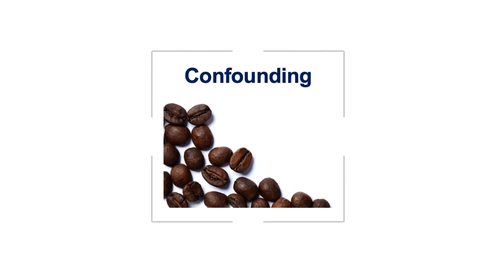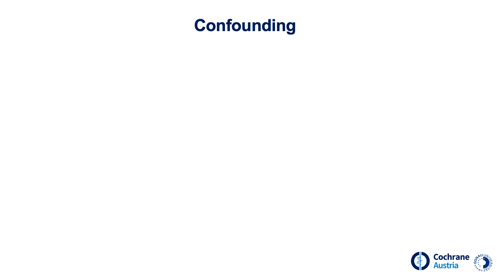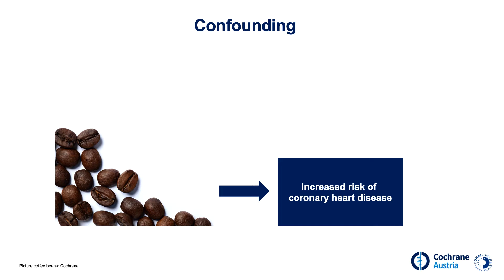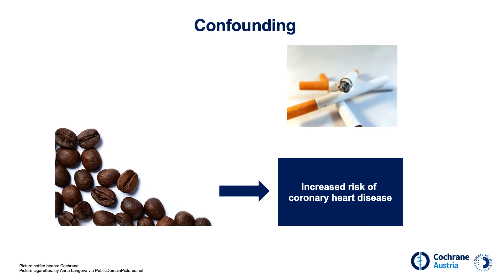Confounders confuse us in interpreting study results and may lead us to infer incorrect conclusions about cause and effect relationships. For example, in one study, we observed that those who drink a lot of coffee are at an increased risk for coronary heart disease. Is coffee dangerous for heart health, or could another factor be responsible? In our example, smoking is responsible for the observed relationship. People who smoke tend to be people who drink a lot of coffee, so taking the confounder smoking not into account, one would draw the wrong conclusion that drinking coffee is a risk factor for heart disease.